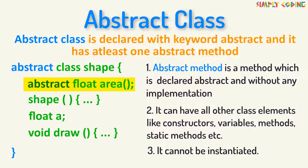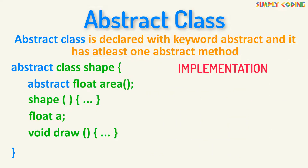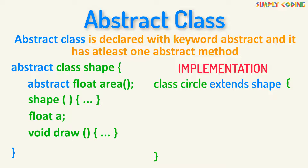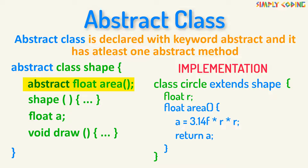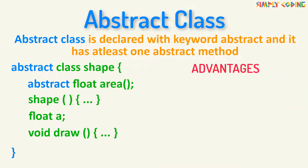Another class needs to provide implementation of it using the extends keyword. The class extending the abstract class has to provide implementation for all the abstract methods in the abstract class. If they are not providing the implementation, then they can make the child class itself abstract.